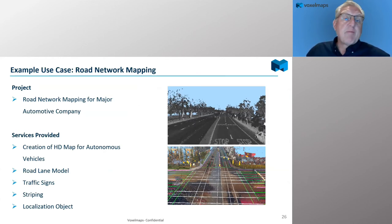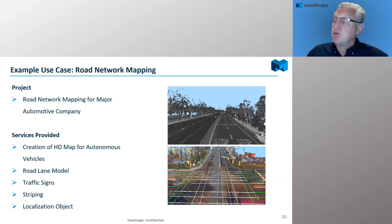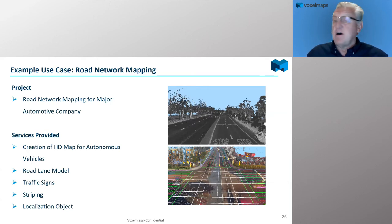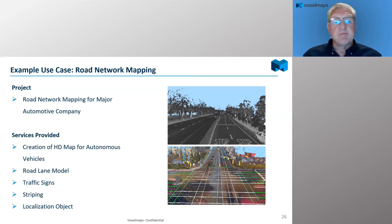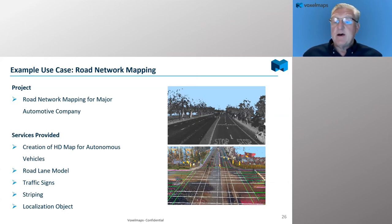Another area where we've done a lot of work is road network mapping. We did some work for a major automotive company — we drove just over 650,000 miles in the US last year on one project, about 50 times around the equator. That's a lot of driving. We can scale up and get BoxerMaps team members out in the field collecting data for substantial periods of time. For this particular customer, we were creating HD maps for autonomous vehicles — developing the roadway model, identifying traffic signs and striping, and providing that to the customer for their HD map recording application.